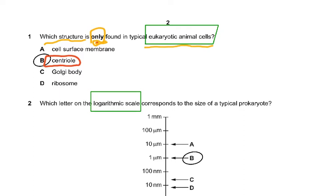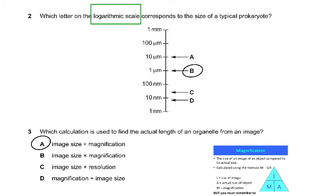Question two asks which letter on the logarithmic scale corresponds to the size of a typical prokaryotic cell. The units given are one millimeter, 100 micrometers, 10 micrometers, one micrometer, 100 nanometers, 10 nanometers, and one nanometer. The answer is clearly B, which corresponds to one micrometer — the typical size of a prokaryotic cell.